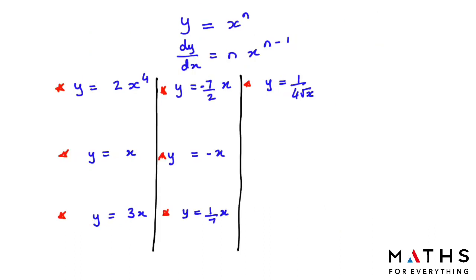So how do we differentiate? If you have y = x to the power of n, we bring the power in front of x and then subtract 1 from the power. For example, y = 2x to the power of 4: write dy/dx, bring the 4 in front — so 2 × 4 = 8 — and subtract 1 from the power: 4 − 1 = 3. The answer is 8x cubed.